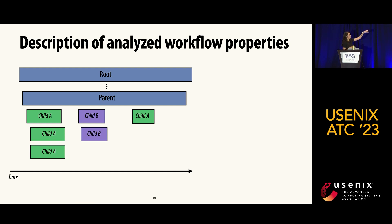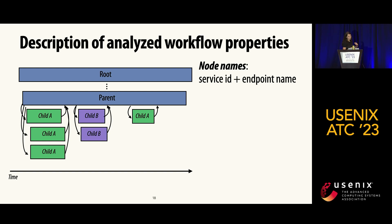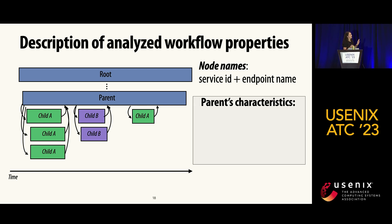This parent is calling a bunch of children — child A four times and child B twice. Every node is named with its service ID and endpoint name. We analyzed the set of unique children a node calls, or 'children sets' — here the parent is calling A and B.